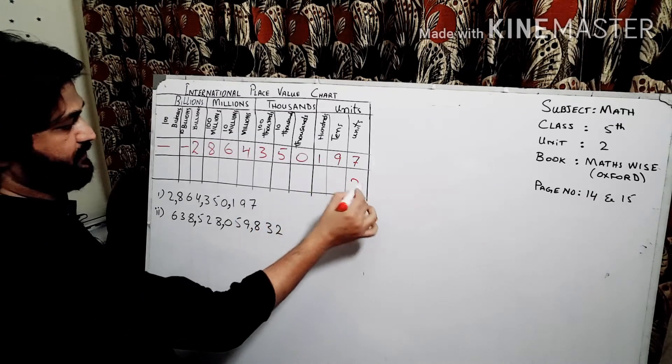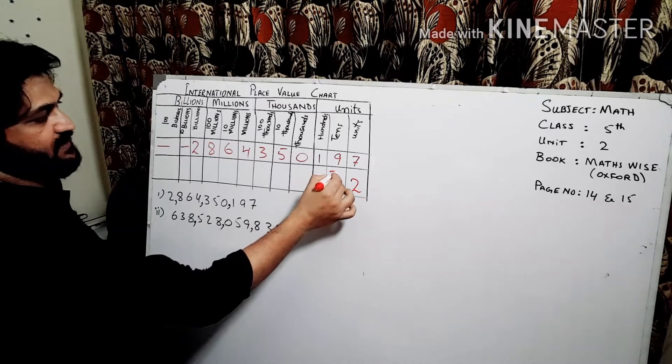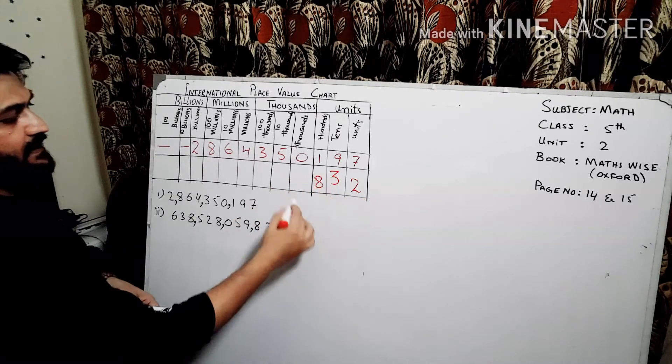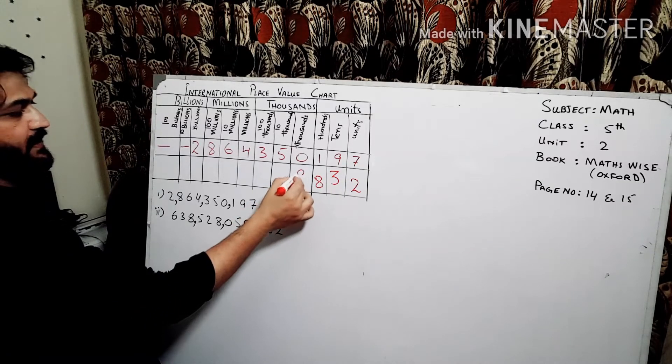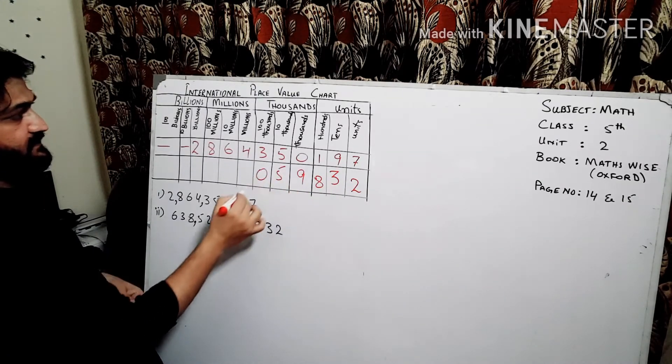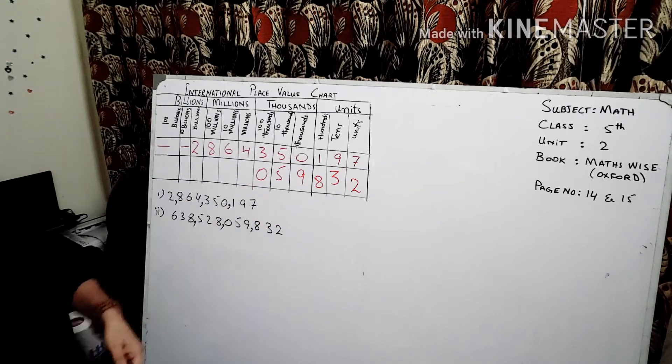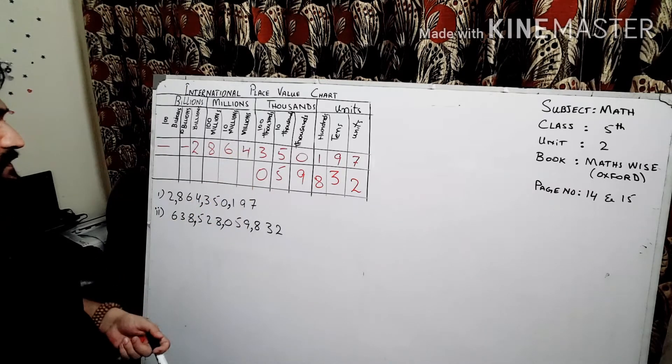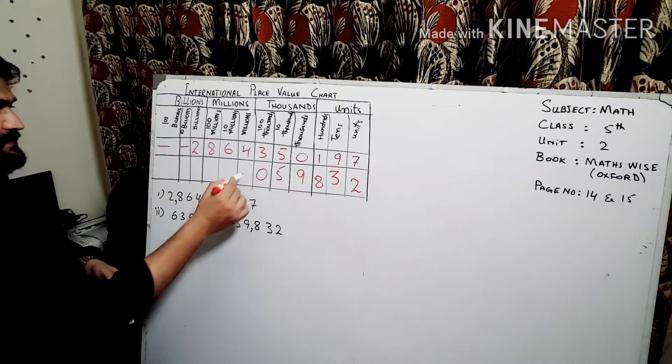The other example: two goes to the units place, three goes to the tens and eight goes to the hundreds - eight hundred thirty two. And nine, five, zero, so there's only fifty nine thousand, and because the hundred thousand is zero.